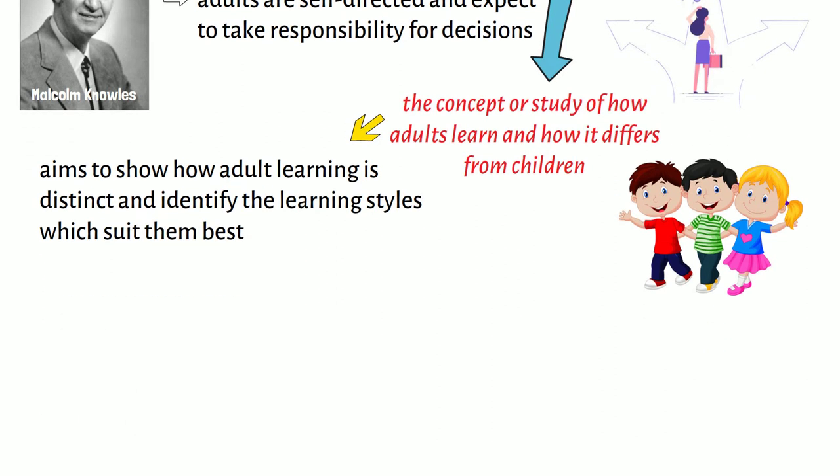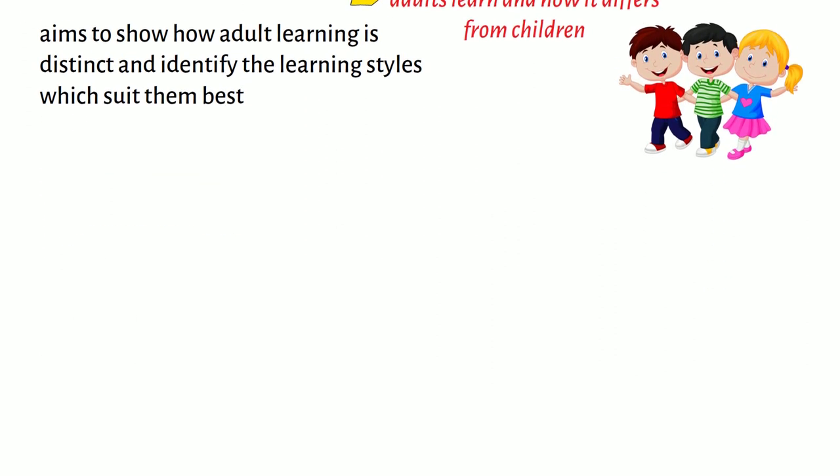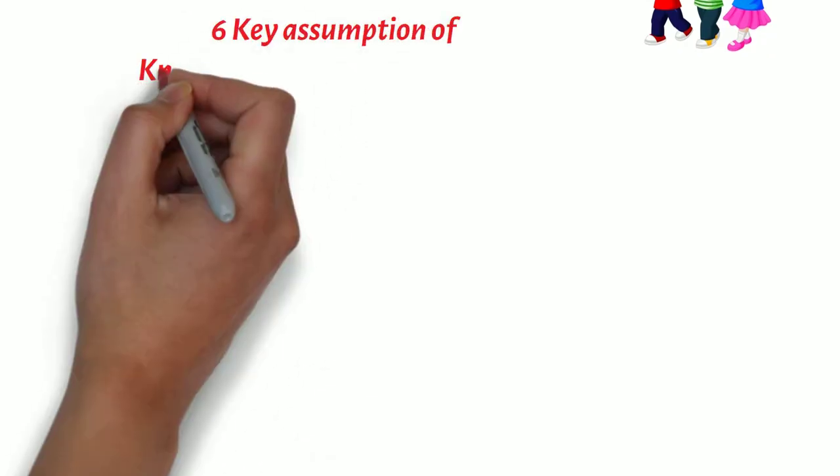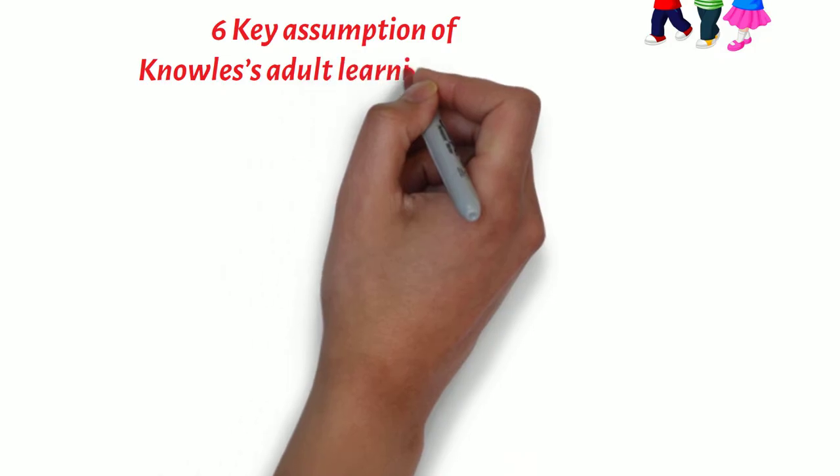In what follows, I will briefly sketch the six key assumptions of Knowles's Adult Learning Theory.